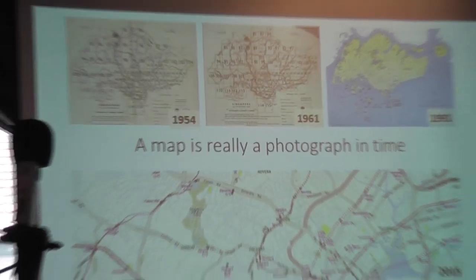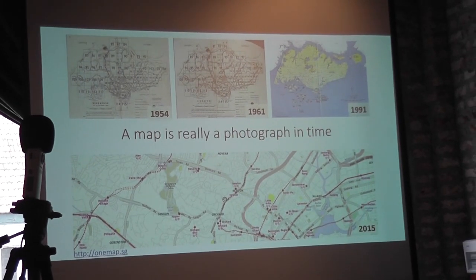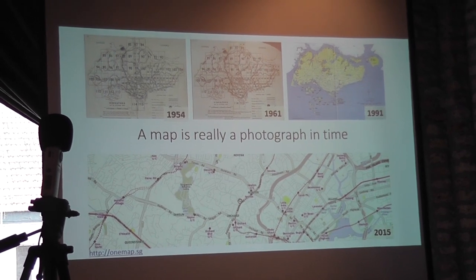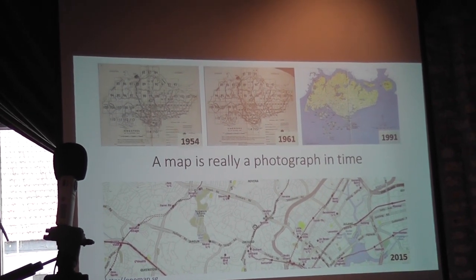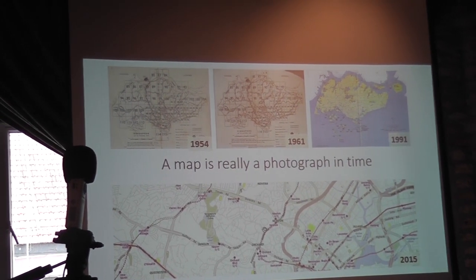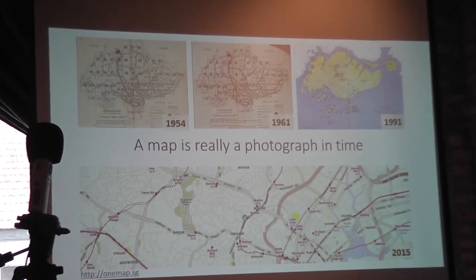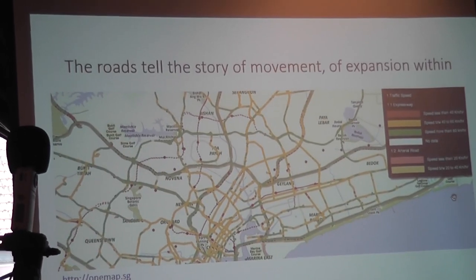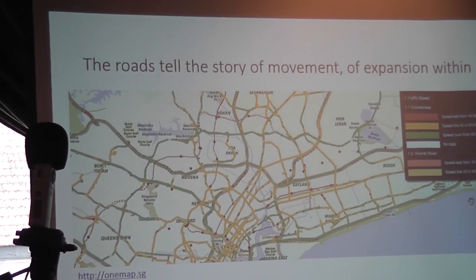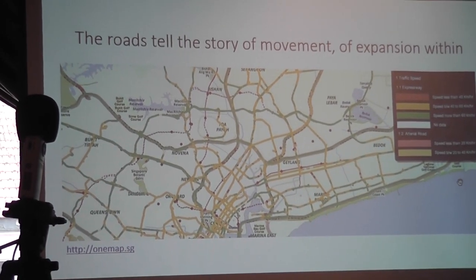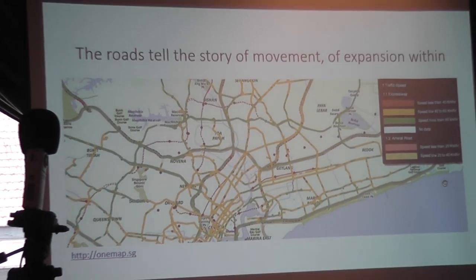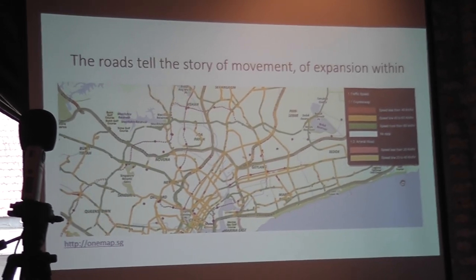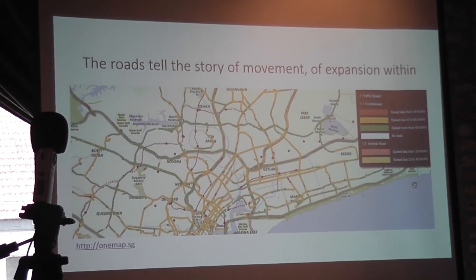A map is really a photograph in time. I mentioned that there were historical maps that are publicly released — the ones on top, the one below is by the land authority. If we look at roads, when you're driving and there's traffic or no traffic, all this information tells a story. Especially if there's a time attached to it — 9 o'clock, 10 o'clock, 11 o'clock — you start to see patterns.